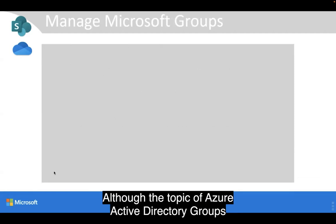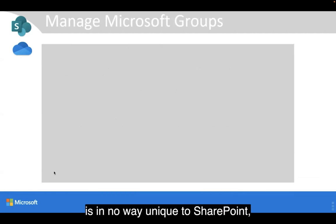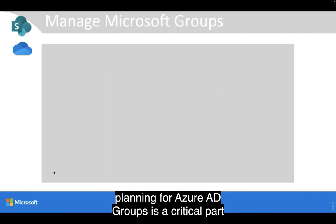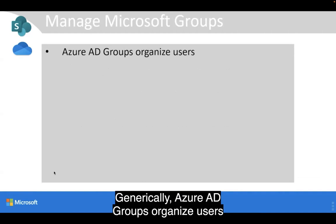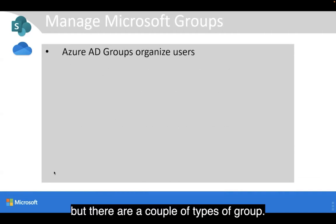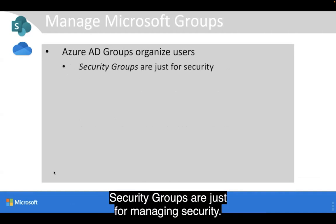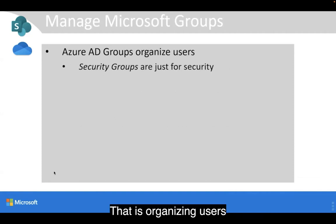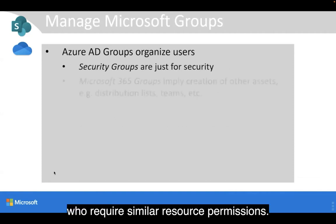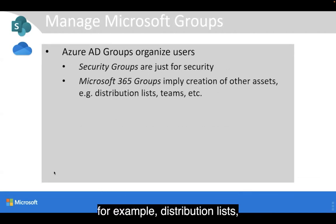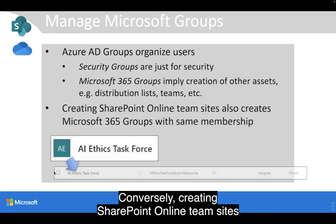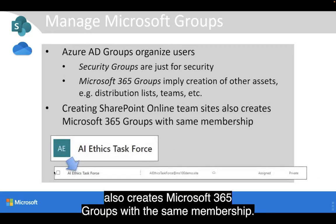Although the topic of Azure Active Directory Groups is in no way unique to SharePoint, planning for Azure AD Groups is a critical part of planning a SharePoint deployment. Azure AD Groups organize users, and there are a couple of types. Security Groups are just for managing security — organizing users who require similar resource permissions. Microsoft 365 Groups imply the creation of other assets, for example distribution lists, teams, and even SharePoint sites. Conversely, creating SharePoint Online team sites also creates Microsoft 365 Groups with the same membership.